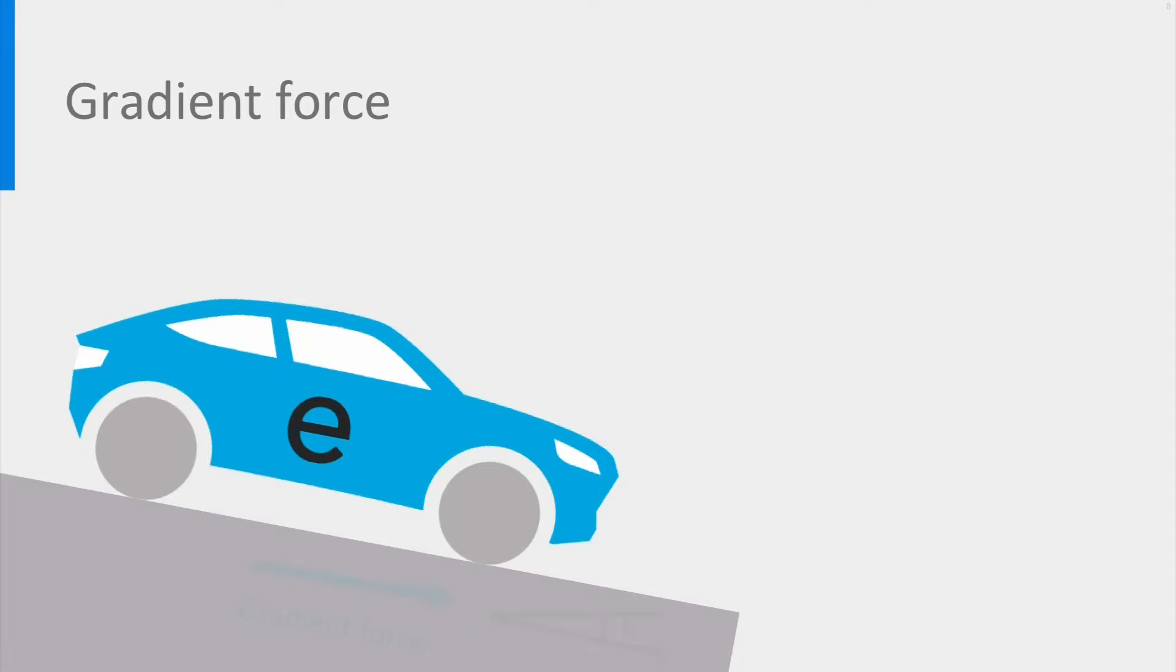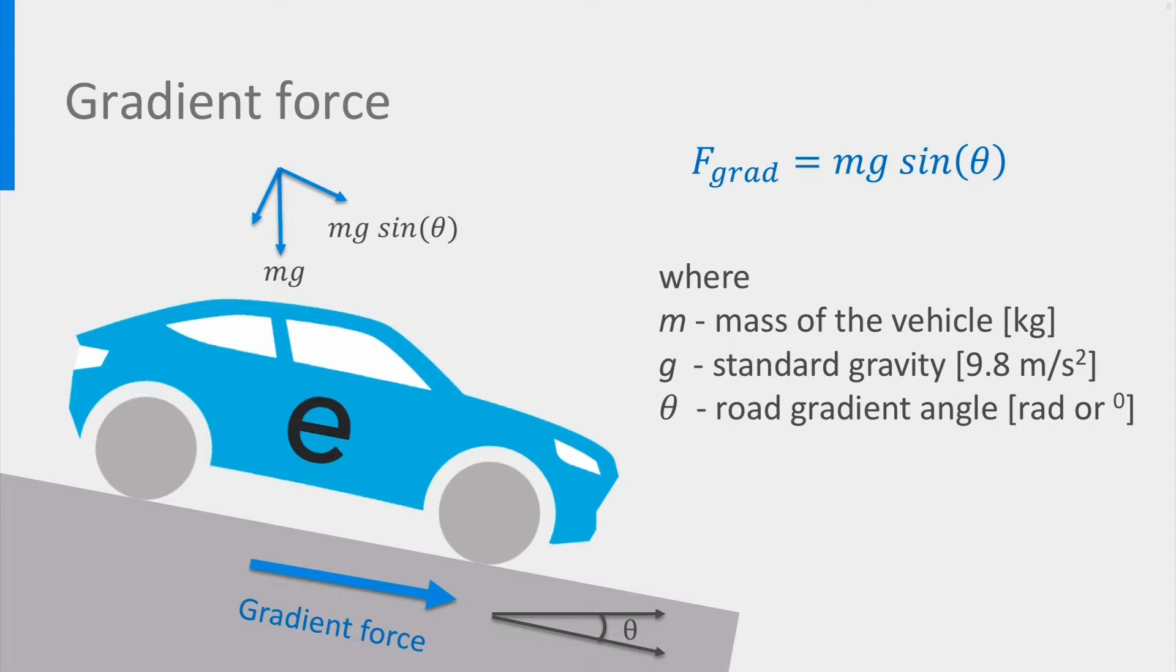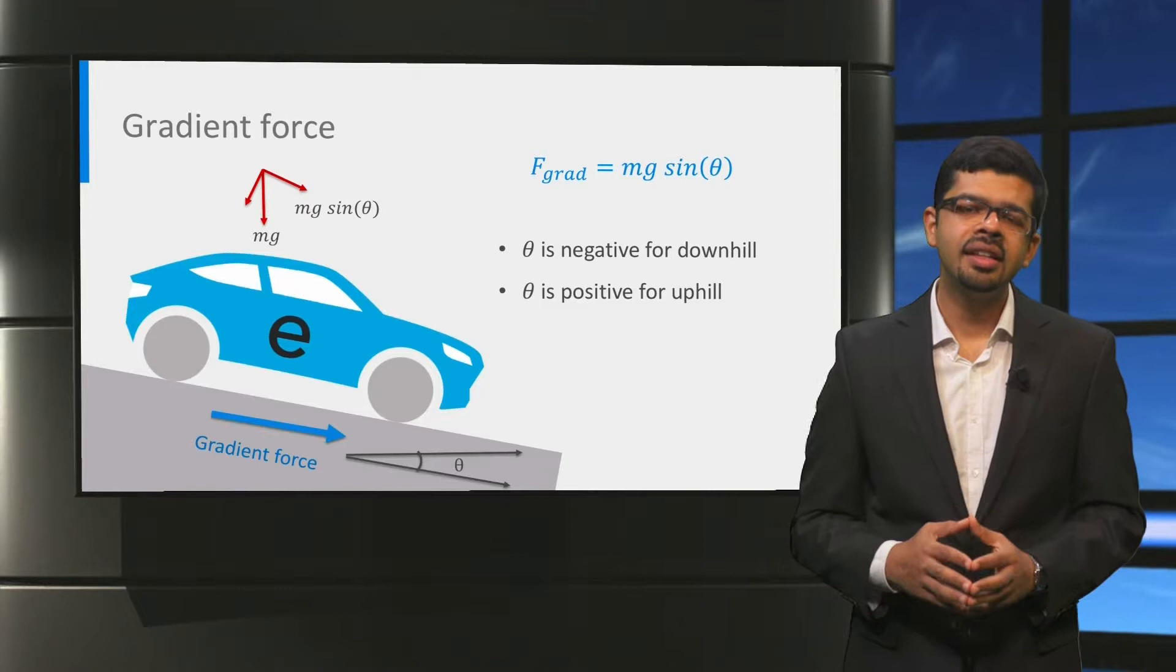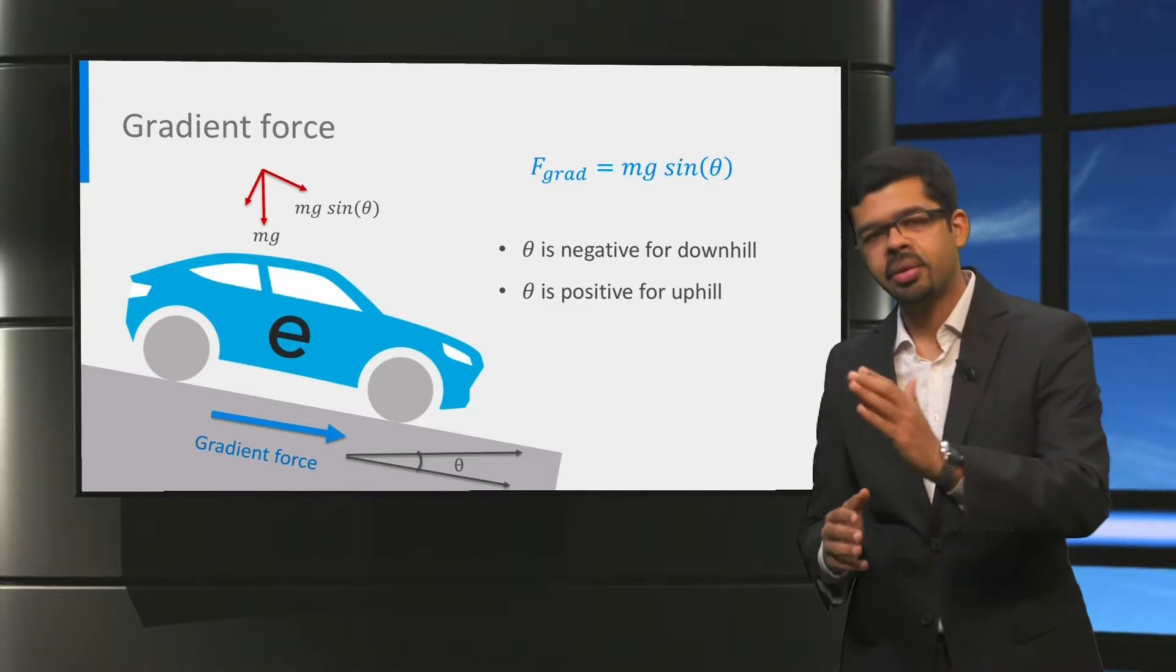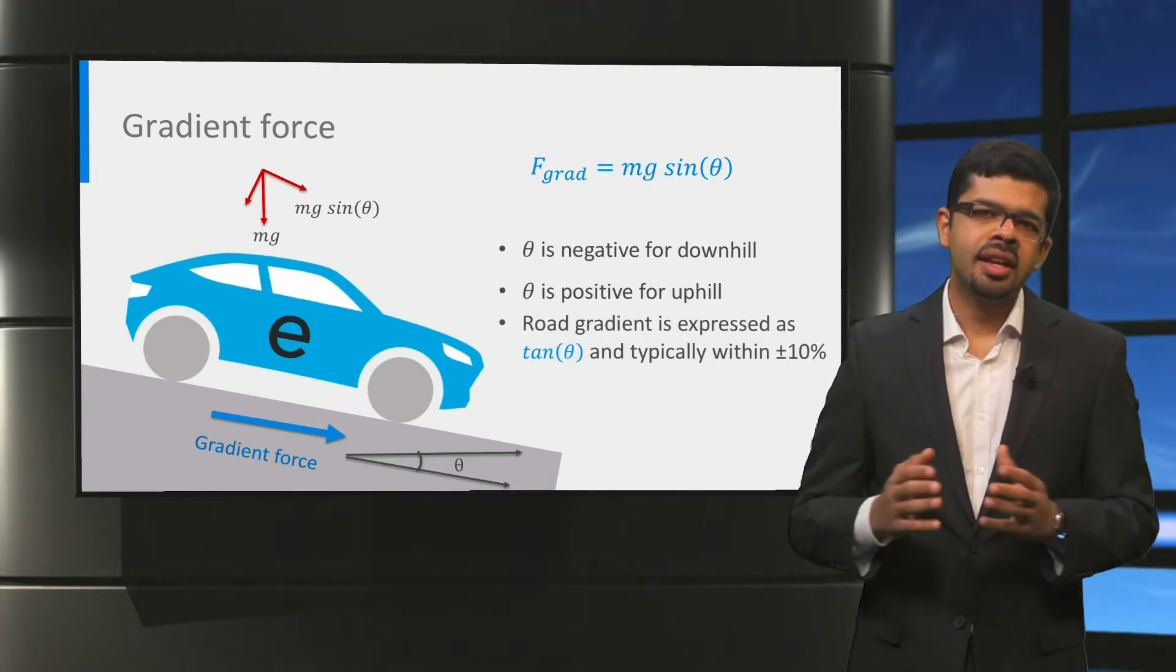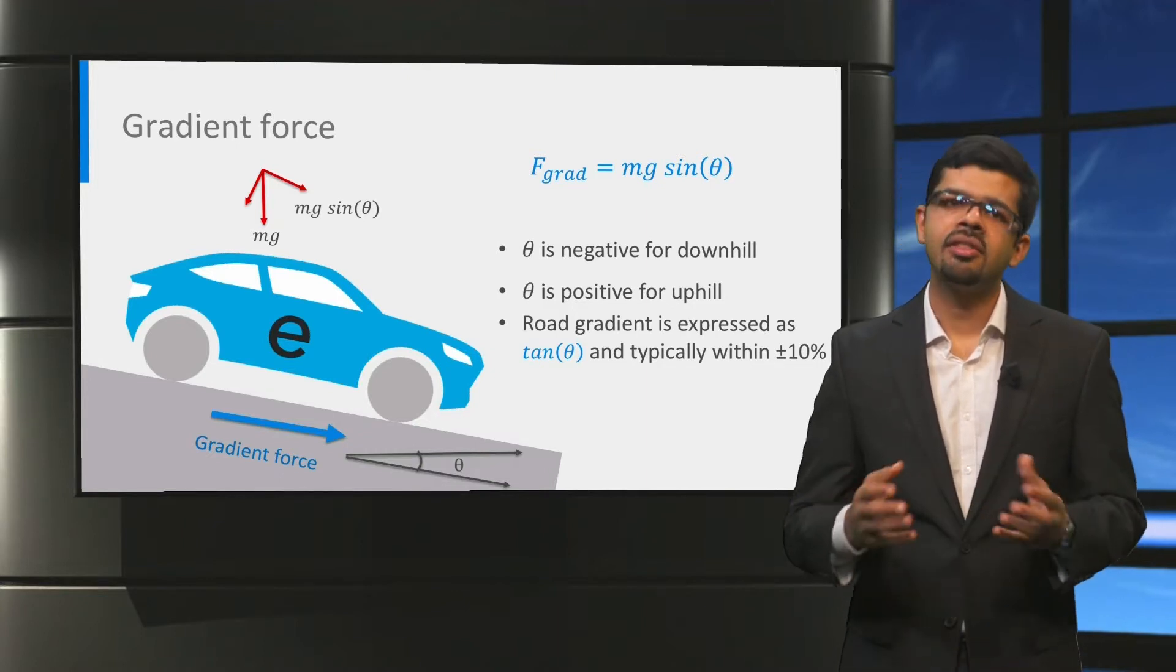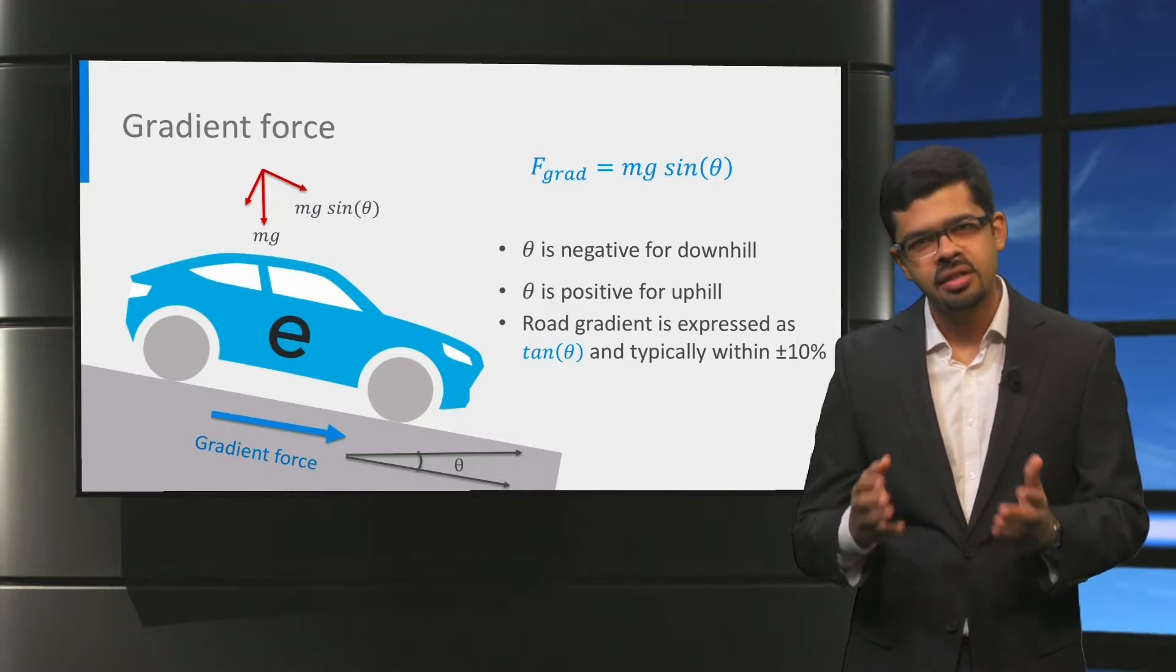The third force that acts on a vehicle is the gradient force, and it occurs when the vehicle is driving on an uphill or on a downhill road. The gradient force is due to the longitudinal component of the gravitational force, namely Mg sinθ, where θ is the inclination angle of the road. As seen earlier, the cosine component Mg cosθ contributes to the normal force and the corresponding rolling resistance force. The gradient force and the angle θ are negative when driving downhill, and the gradient force and the angle θ are positive when driving uphill. The road gradients are expressed as a percentage in terms of the tangential value of θ, and have value typically between ±10%.